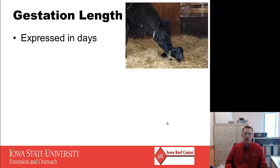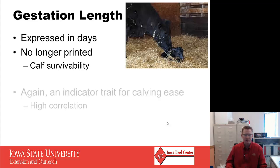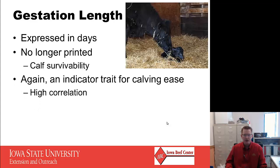Gestation length is expressed in days and is no longer printed by breed associations, because over-selection for gestation length actually harmed calf survivability. We need those calves to be in utero long enough to develop vital organs, hair coats, and other attributes so that when placed in harsh environments they can thrive and survive. It is an indicator trait for calving ease and has a high correlation with it, but if we're using calving ease direct, shorter-gestation bulls will already show a better calving ease direct EPD.